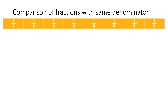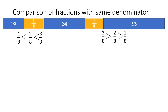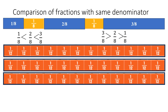Here I am taking only one strip of 1/8 and shading 1 part, 2 parts, and 3 parts. It is very clear from this strip that 1/8 < 2/8 < 3/8. I can also write it in reverse order: 3/8 > 2/8 > 1/8. Now take 3 strips of 1/12.